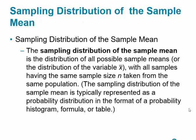The sampling distribution of the sample mean is simply the distribution of all possible sample means — the distribution of the variable x-bar — with all samples having the same size and taken from the same population. For example, if we're sampling American adults, we must take samples of the same size (say 2,500) every single time and always from the same population.